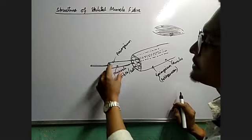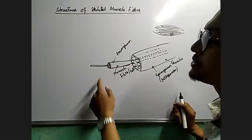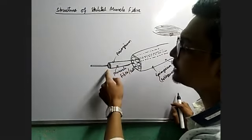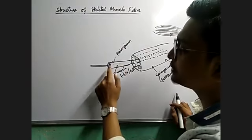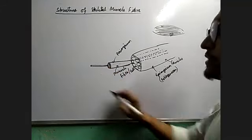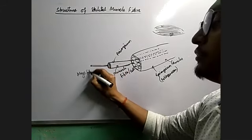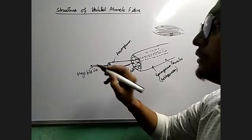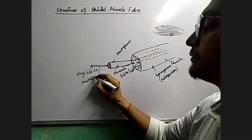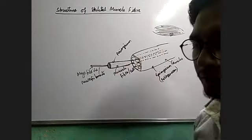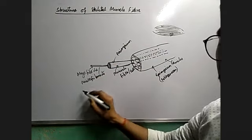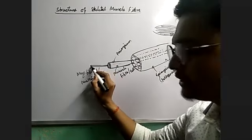Then inside the muscle cell or muscle fiber, we will be able to see smaller microfilaments — elongated, very thin, very small elongated microfilaments. These are known as myofibrils. These are the myofibrils or microfilaments.